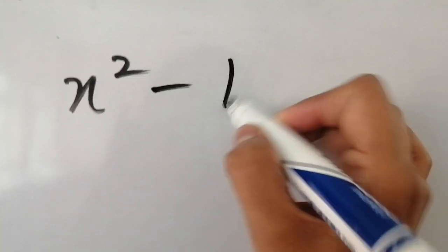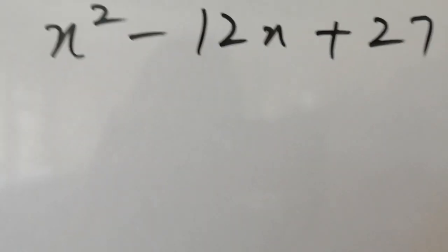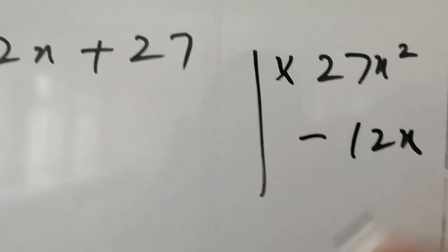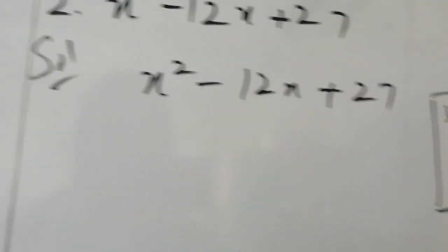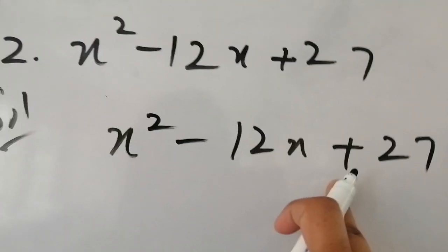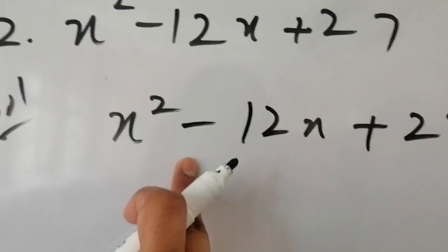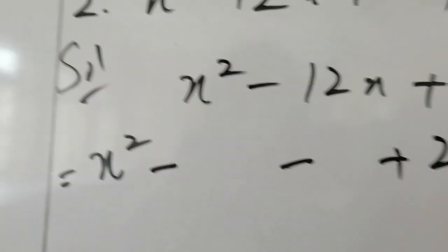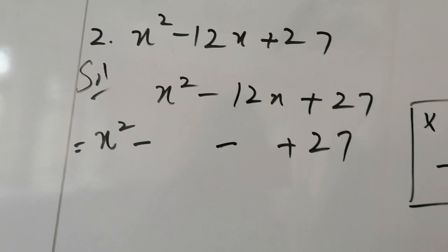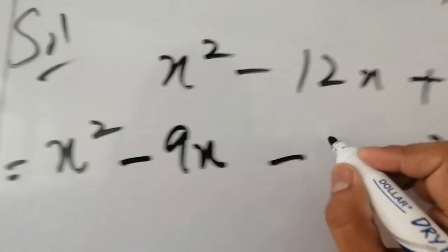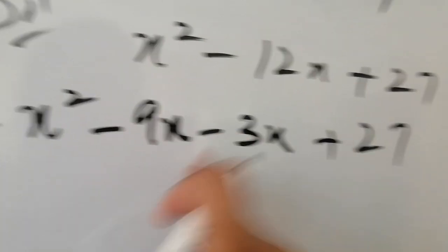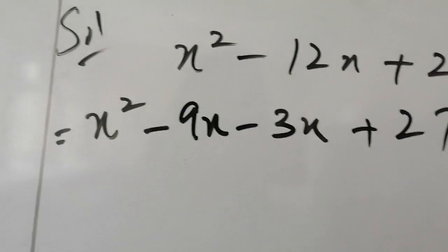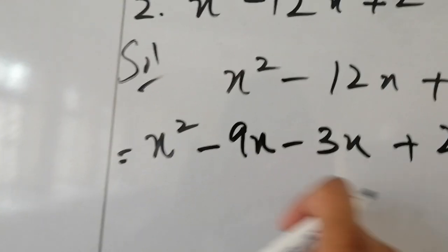Since the last term is plus and the middle term is minus, the two broken terms will have the same sign — both minus. We need two numbers that multiply to 27 and add to 12. Nine and three work: 9 × 3 = 27, and 9 + 3 = 12. With both signs minus, we get −9x and −3x.